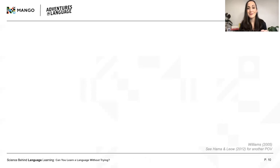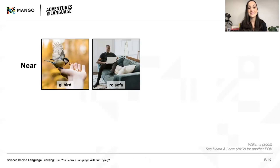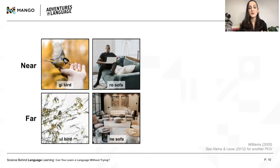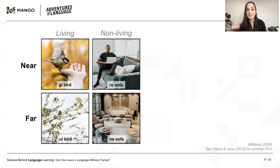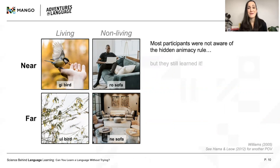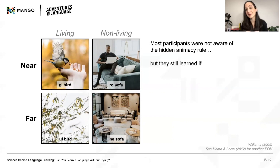John Williams tested out this theory using a semi-artificial language. He taught learners that the made-up articles gi and ro meant 'near,' and ul and ne meant 'far.' Then he asked them to listen to a bunch of sentences and indicate which meaning they heard. But here's the catch: while the learners were focused on learning 'near' and 'far,' there was a hidden rule. Gi and ul referred to living things, and ro and ne referred to non-living things. Most participants never became aware of this animacy rule, but they still learned it. A caveat: while the Williams study, among others, suggests that it is possible to learn language implicitly, it's very difficult to measure awareness, let alone the absence of it — so the question of whether awareness is required for language learning remains contentious.